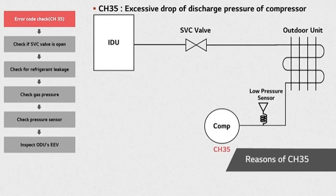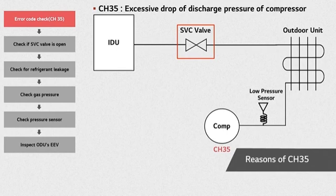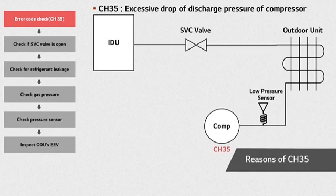CH3-5 is an error related to a drop of the compressor's discharge low pressure. Low pressure drop will cause the compressor to remain in off state. Common causes of this error include service valve blockage, lack of refrigerant, defects in the low pressure sensor, a malfunction of the IDUs or ODUs EEVs, etc.